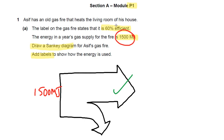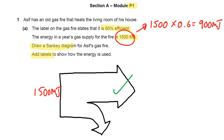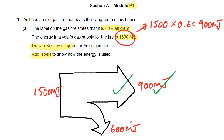If it's 60% efficient, I need to work out the output. To work out 60% of 1500, I do 1500 times 0.6. That's 900 megajoules, so I can label this as 900 megajoules. And then what's left over is 600 megajoules — 1500 take away 900 is 600. If we've got those labels on, then you've got yourself a second mark. You could also just have written 100%, 60%, and 40% — that would have gotten the mark too.